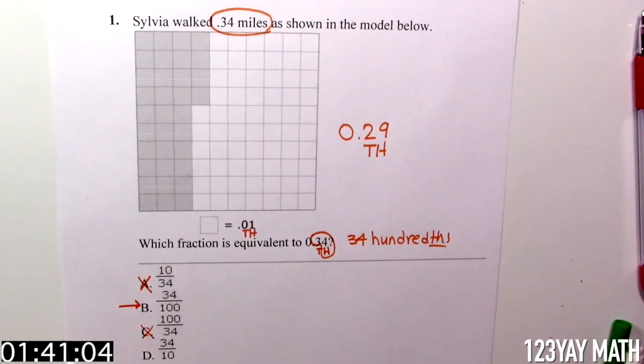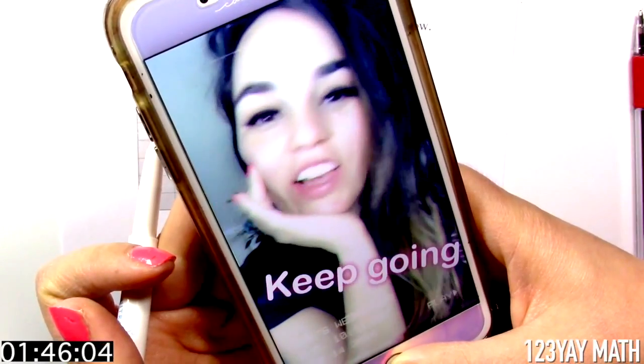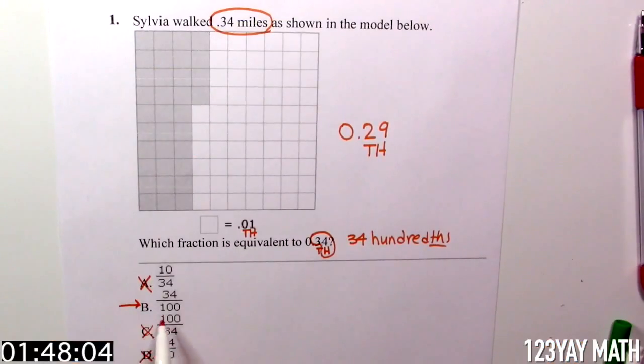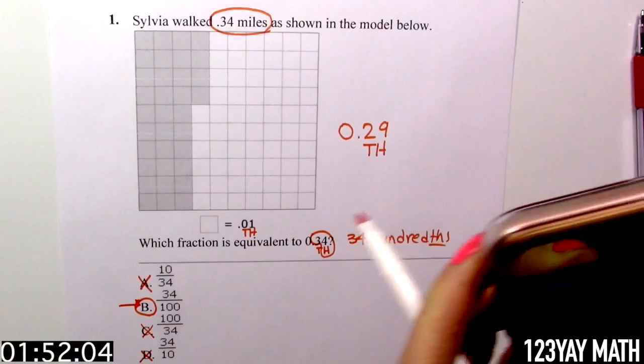Definitely not. What about 34 tenths? No, no, no, that's not the answer. Well, as we thought before, B is the correct answer.